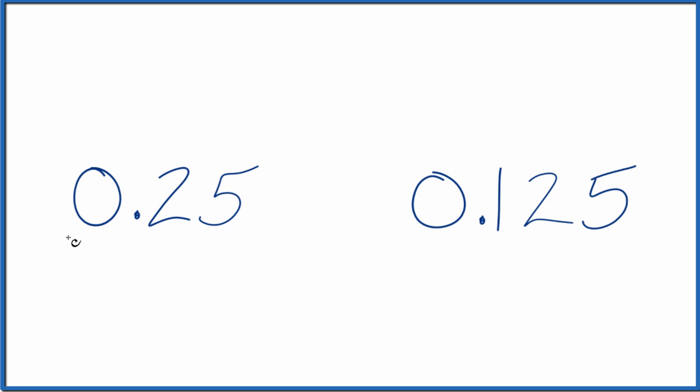So here's how you do it. We could look first at the zeros. We compare the zeros first. Those are the whole numbers. They're the same. That doesn't help us.